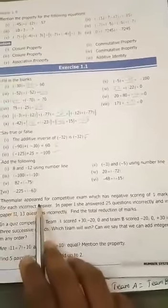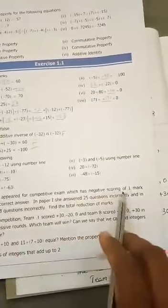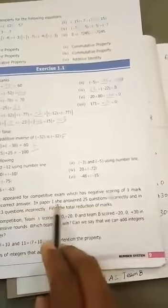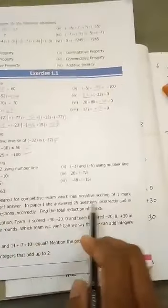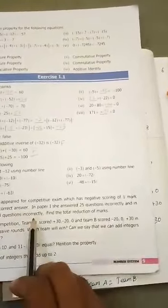Thane Malar appeared for competitive exam which has negative scoring of 1 mark for each incorrect answer. In paper 1, she answered 25 questions incorrectly and in paper 2, 13 questions incorrectly. Find the total reduction of marks.